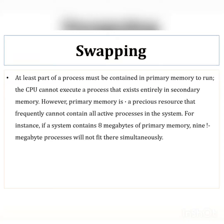Today we are going to see the concept of swapping. When a number of processes are going to be loaded into main memory and there is not enough free space to load all these processes, we need to use virtual memory from the secondary device. We need to swap processes from main memory to virtual memory and back, and at least part of the process must remain in primary memory — that is swapping.